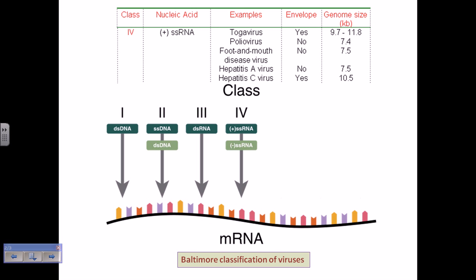Examples of Class 4 positive-strand RNA viruses include Togavirus, poliovirus, foot-and-mouth disease virus, hepatitis A, and hepatitis C — really dangerous and pathogenic viruses. To memorize them, use P and H: polio and hepatitis. Their genome sizes are similar — 7.4 KB for poliovirus, 7.5 KB for hepatitis A, and 10.5 KB for hepatitis C. Poliovirus and hepatitis A are non-enveloped; hepatitis C is an enveloped virus.